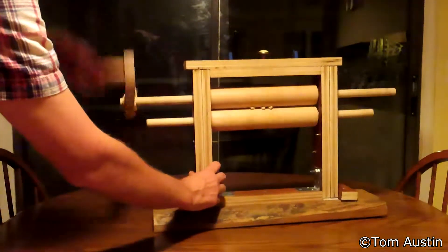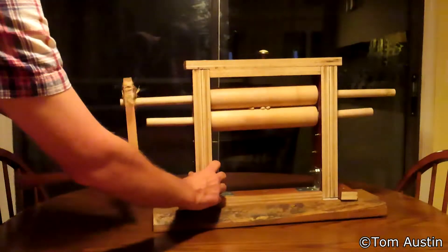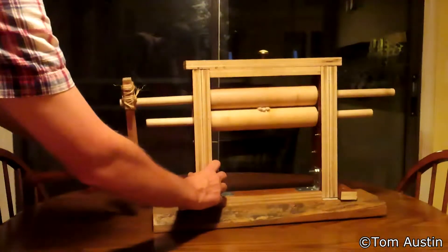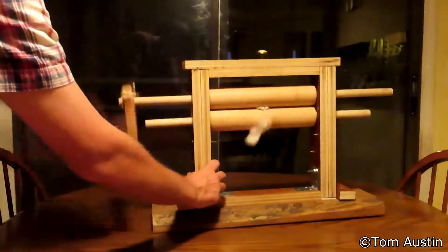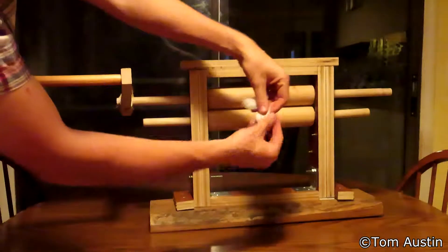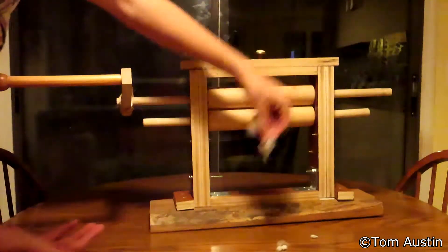Here I'm ginning some upland cotton. This is typically what is not ginned on a roller gin, because the lint clings way too strongly to the seed, as you'll see here, but that's all I have on hand at the moment, so I'm just using it for demonstrational purposes.